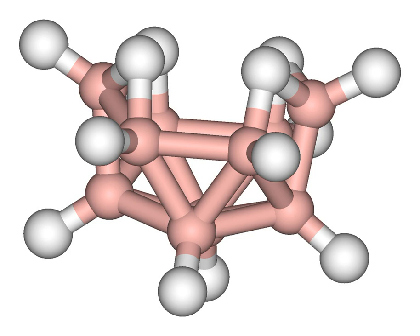Decaborane, also called decaborane-14, is the borane with the chemical formula B10H14. This white crystalline compound is one of the principal boron hydride clusters, both as a reference structure and as a precursor to other boron hydrides. It is toxic and volatile, with a foul-smelling odor.